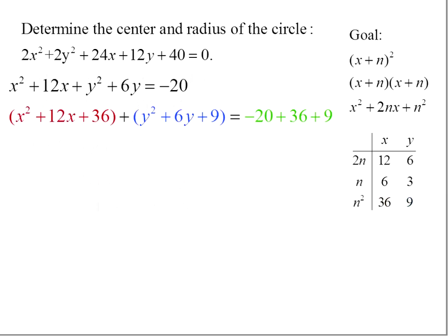We now are going to factor. We have x² + 12x + 36 and y² + 6y + 9, and we're going to factor each of those independently. And then we add the constants on the right side of the equation, so we'd add the -20, the 36, and the 9.